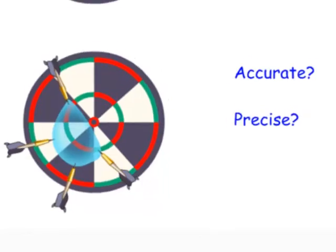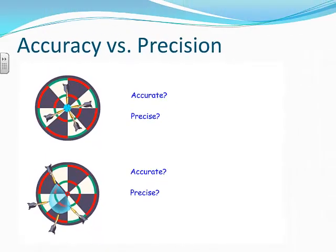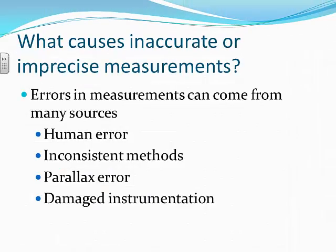Errors in measurements can come from many sources. There's always human error — we may read something wrong, not line up a measurement instrument correctly, use the wrong units, or misread a ruler. There are also inconsistent methods: for example, measuring one liquid with a graduated cylinder and another with a 100 mL beaker would be an inconsistent method for measuring liquids.